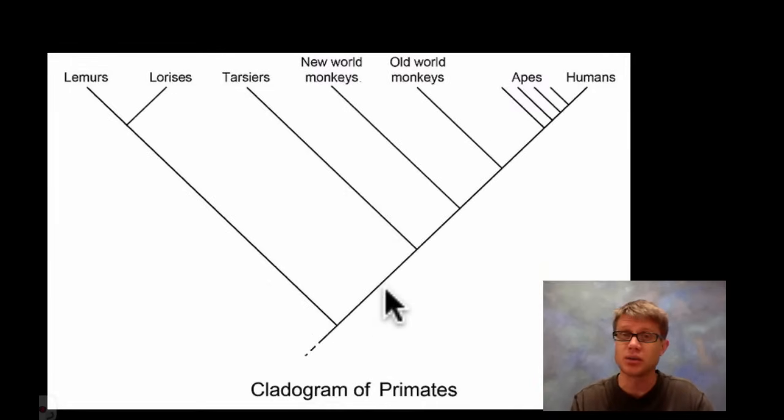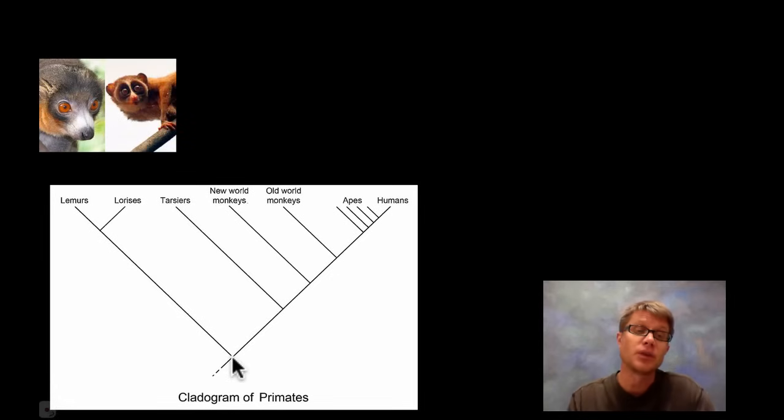Where are you? You're right here on the human side. If we go across from the left, if we look at these two, the lemur and the loris, they share a common ancestor right here. But they also show a distant common ancestor with all of the primates on here all the way back here. If we work across to the tarsier or the new world and old world monkeys, that's kind of a weird term.